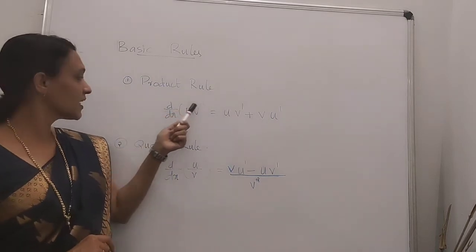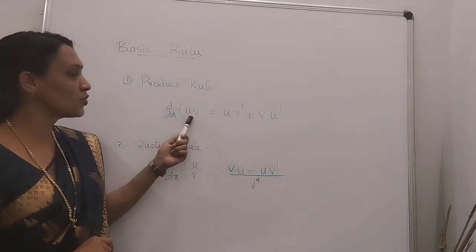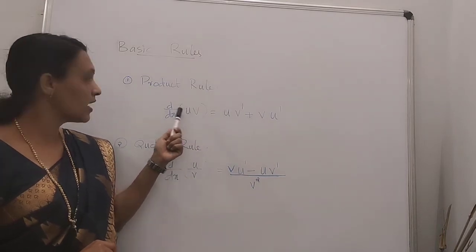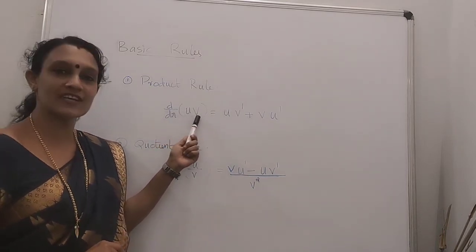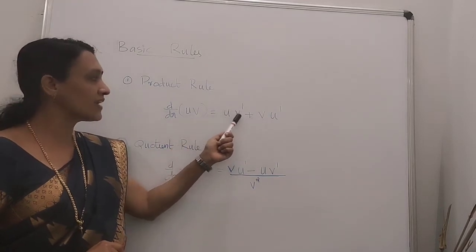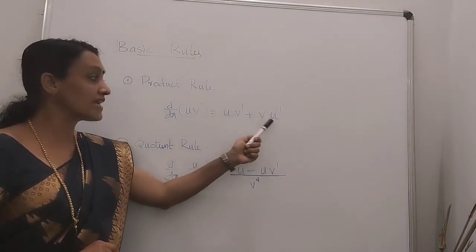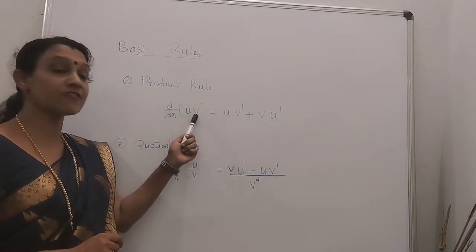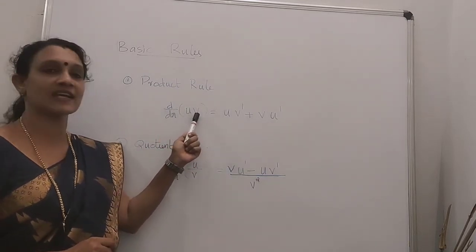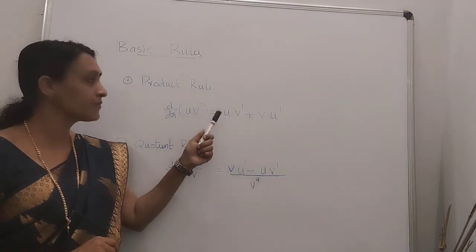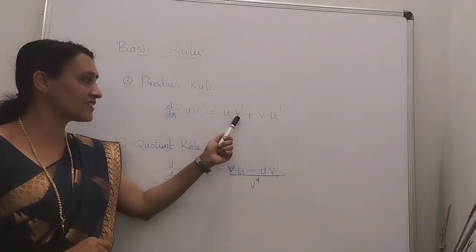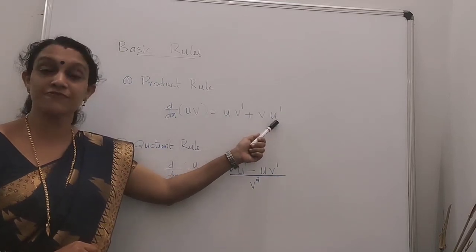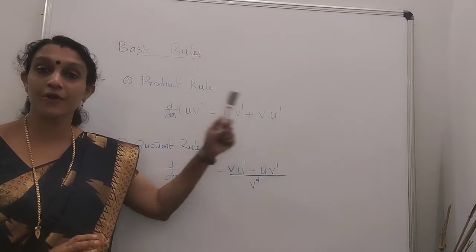The product rule says that d by dx of uv — where u is the first function and v is the second — is equal to u into v dash plus v into u dash. That is, the derivative of the product equals the first function into the derivative of the second, plus the second function into the derivative of the first. This is known as the product rule.